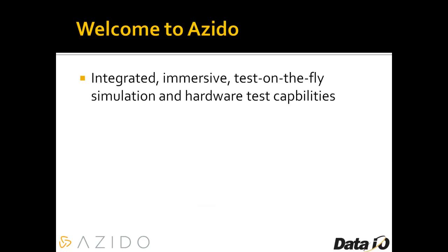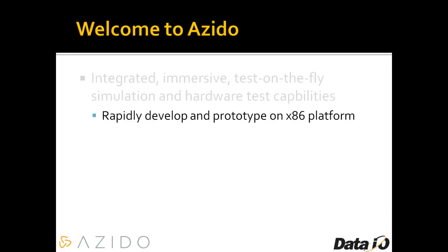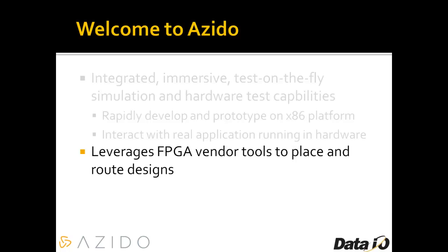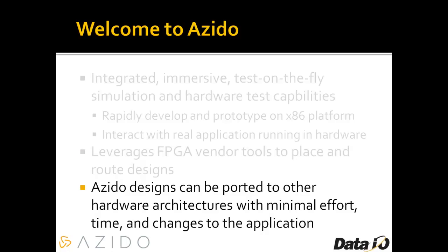Another key aspect of Azito is its integrated immersive test-in-the-fly simulation and hardware test. It allows you to rapidly develop and prototype on an x86-based platform to verify your algorithm and implementation. Then once you port it to an FPGA, you can use Azito to interact with the real application hardware running at full speed. For FPGA-based systems, Azito leverages vendor tools from the FPGA suppliers to place and route the designs. This means Azito's designs can be easily ported to other hardware architectures with minimal effort, time, or changes to the application — because it lets you work at the algorithmic level and spend less time at the implementation level.